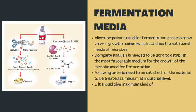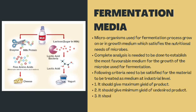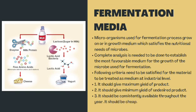The following criteria need to be satisfied for a material to be treated as a medium at industrial level: first, it should give maximum yield of product; second, it should give minimum yield of undesired product; third, it should be consistently available throughout the year; and fourth, it should be cheap.